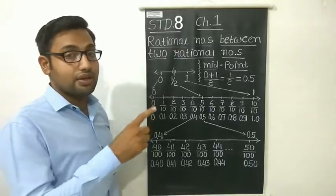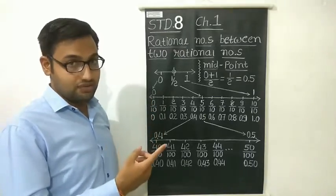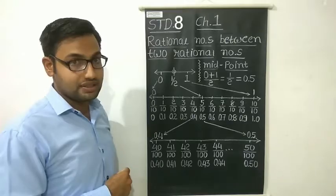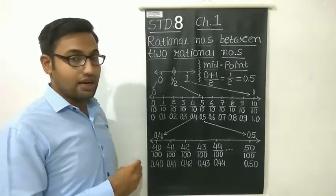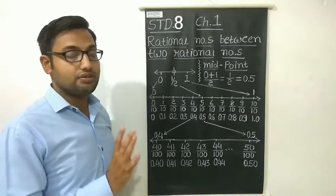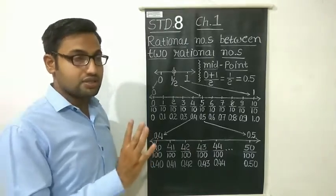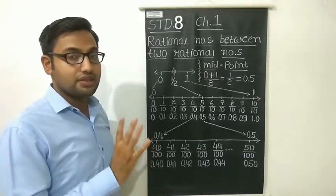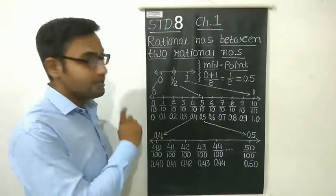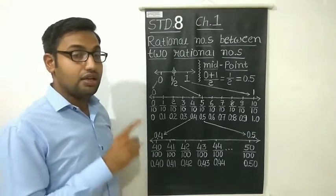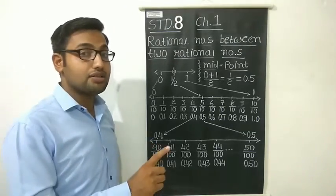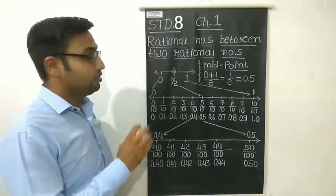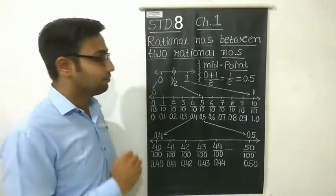The case for rational numbers is different from the previous 3 number sets. As we know, there are finite numbers between two natural numbers, two integers, and two whole numbers. But for rational numbers, there are infinitely many numbers between two rational numbers. Today we will study about this.